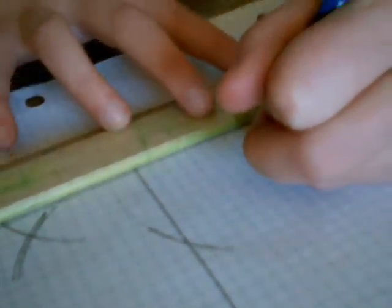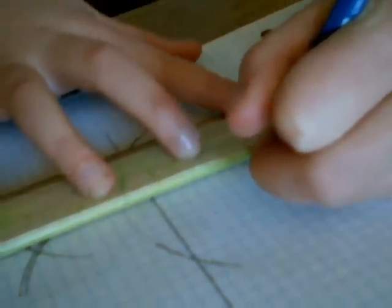Now, take your straight edge and draw a straight line from your point to where your two marks cross.